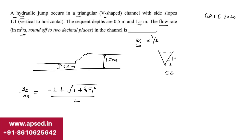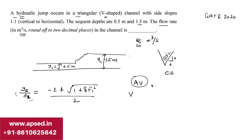This is the most common relation we know for hydraulic jump. From this relation, if we want to find the discharge, we know Q = Area × Velocity. The area is the cross-sectional area of the triangular section, and the velocity can be found if we have the Froude number. Both y₁ = 0.5 m and y₂ = 1.5 m are given, so we can find velocity and discharge.